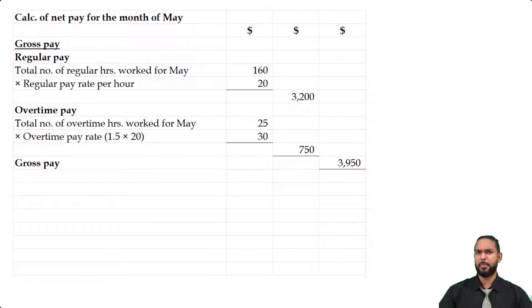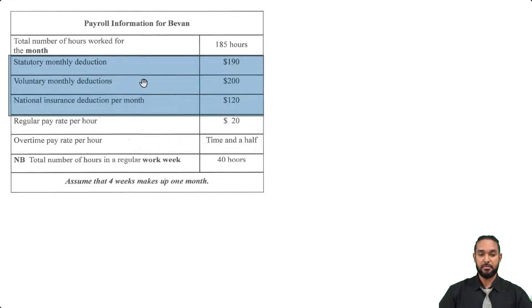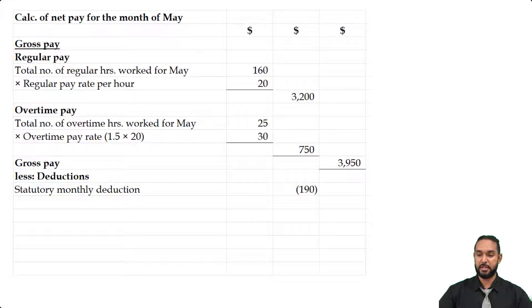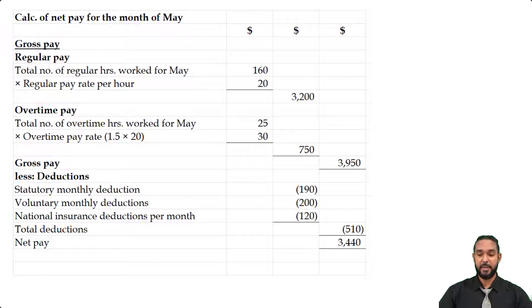We want net pay, so it's gross pay minus all deductions. The deductions from the table are: statutory $190, voluntary $200, and national insurance $120. Those total $510. Taking $510 away from $3,950 gives us $3,440 — that's Bevan's net pay.